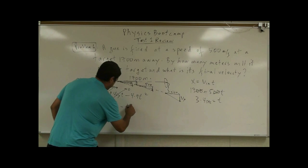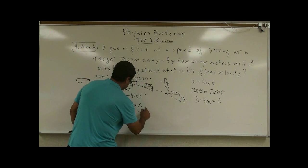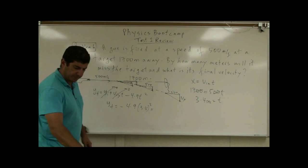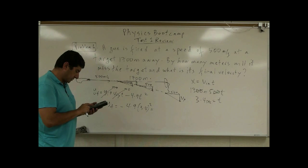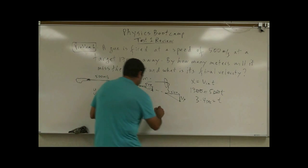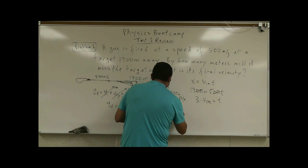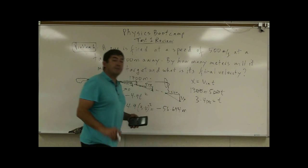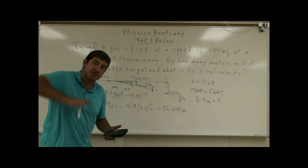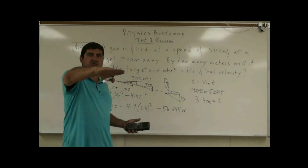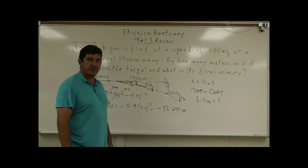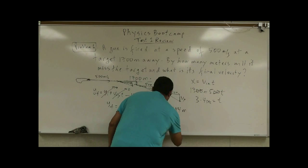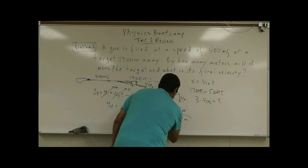So Y-final equals negative 4.9 times 3.4 squared. That gives us negative 56.644. That means you will end up 56.644 meters below the level that the bullet started at. So you will miss the target by that amount. The answer is 56.644 meters — that's how much you will miss it.